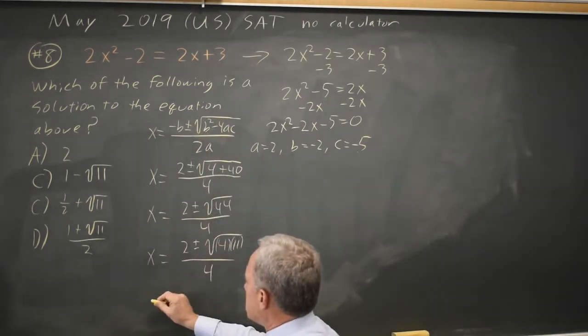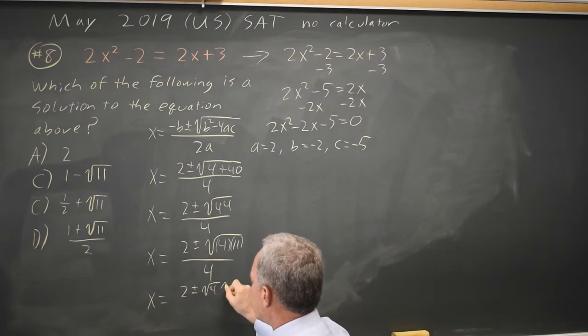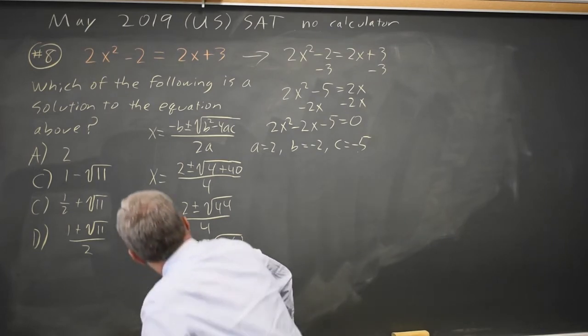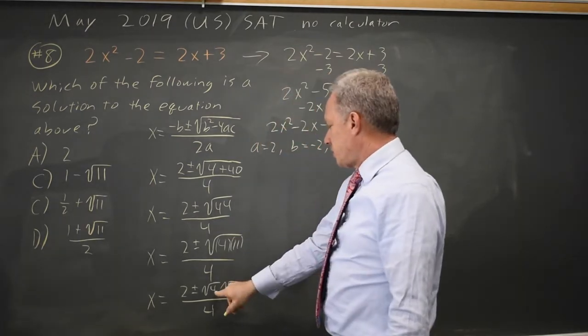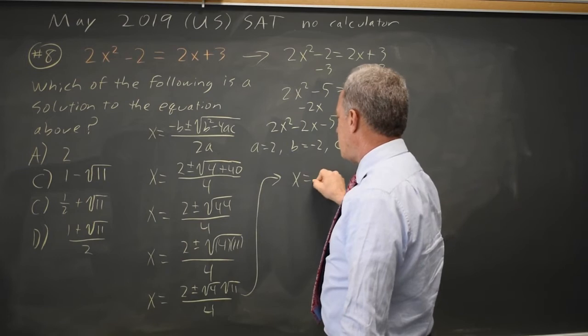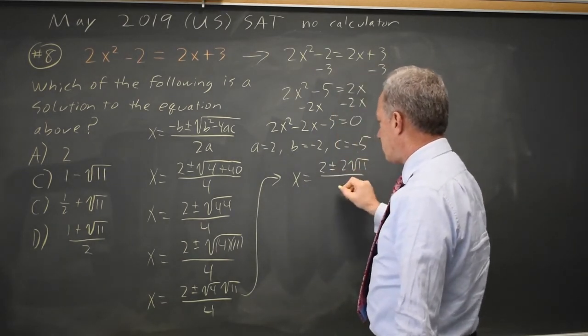A lot of people have trouble simplifying these square roots. That's x equals 2 plus or minus square root of 4 times square root of 11 over 4. Hopefully that step is familiar - the square root of the product is the product of the square roots. Now I can rewrite that as x equals 2 plus or minus 2 root 11 over 4.